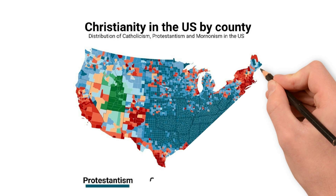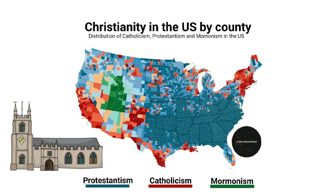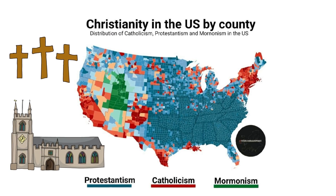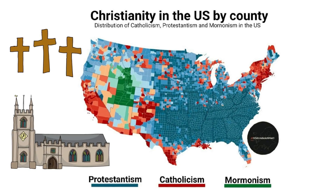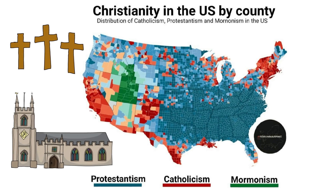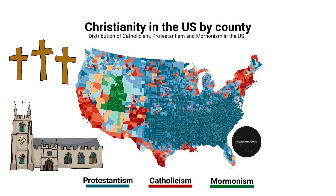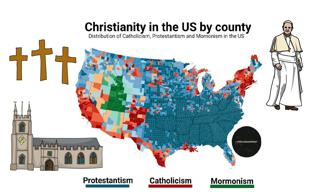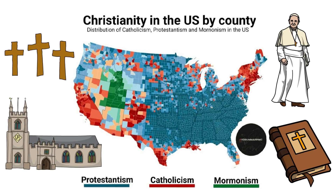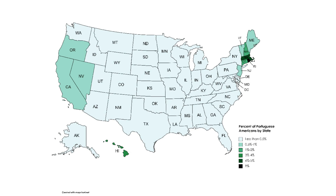In contrast, we can look at Christianity — this time by county. This map doesn't show the percentage of Christians but instead divides between Protestantism, Catholicism, and Mormonism, showing which areas have a prevalence of each. Only Utah and part of Idaho are predominantly Mormon. The vast majority is Protestant. Catholic areas are mostly on the upper east coast, California, southern Louisiana, southern Texas, Nevada, and Arizona, where the three types of Christianity mix the most.